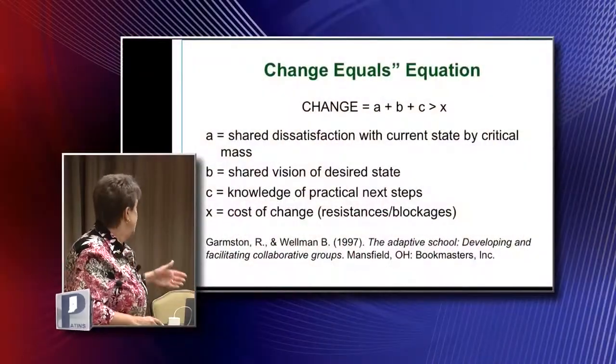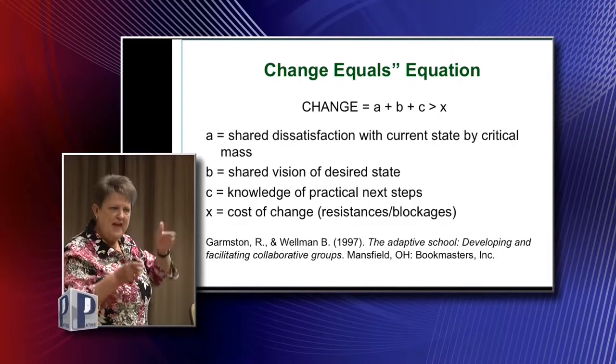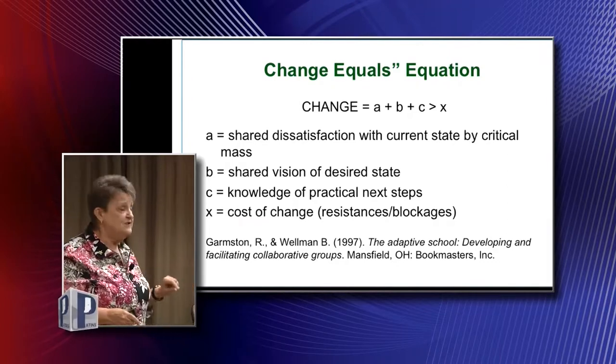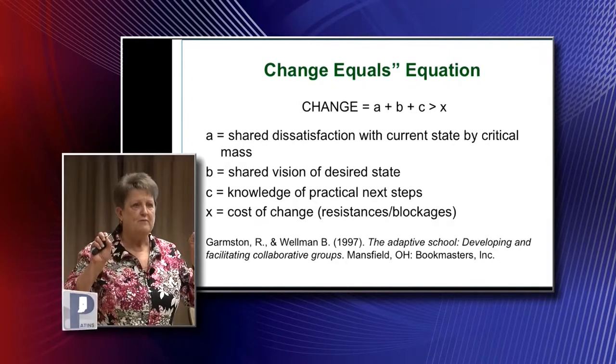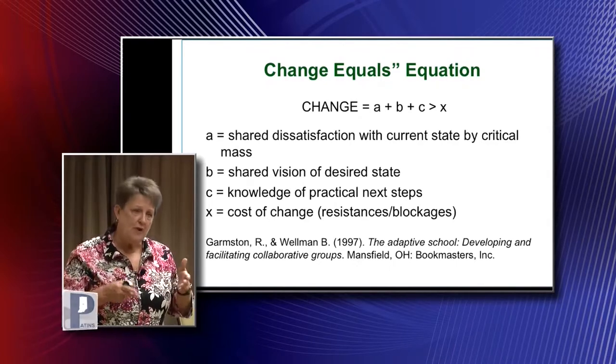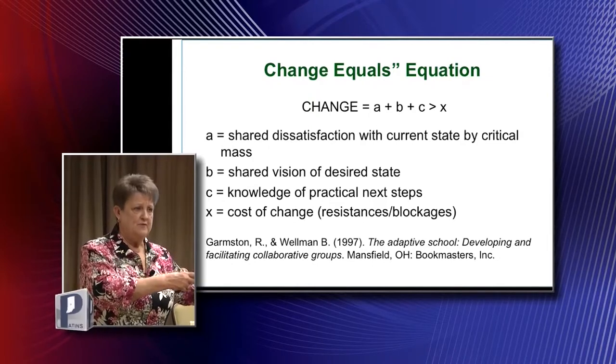A is a shared dissatisfaction with the current state by a critical mass. You can be as unsatisfied as you want, but unless there's a critical mass that says change needs to occur, it usually doesn't. B is a shared vision of the desired state. C is the knowledge of practical steps from getting to the current state to the desired state. And X is the cost of change — not necessarily money, but the resistances and blockages related to this change.